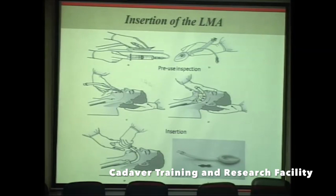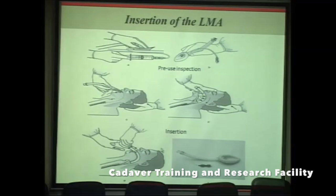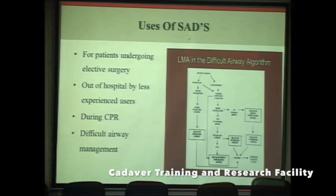After cuff deflation, lubrication, and pre-use inspection, position the patient and stabilize the occiput. Hold the LMA in a pen-like fashion with the middle finger between the mask and the airway tube, and glide it along the hard palate pressing it with the index finger. This technique will be demonstrated in the next session.